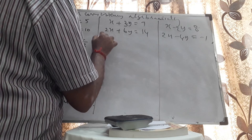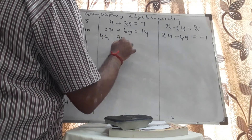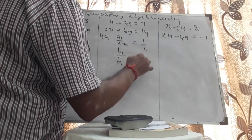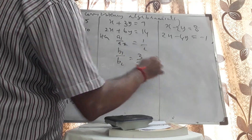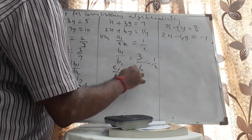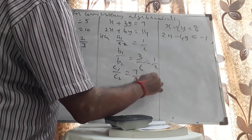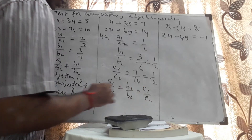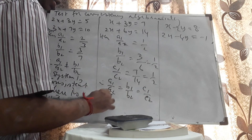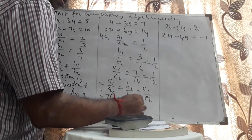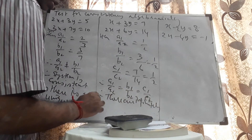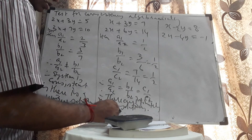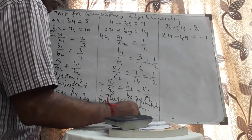Case 2: x plus 3y equals 7 and 2x plus 6y equals 14. Here A1/A2 equals 1/2, B1/B2 equals 3/6 which equals 1/2, and C1/C2 equals 7/14 which equals 1/2. Therefore A1/A2 equals B1/B2 equals C1/C2, so there are infinitely many solutions and the system is consistent.